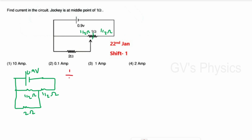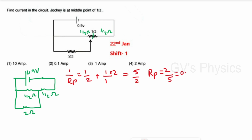For the parallel combination of 1/2 ohm and 2 ohm: 1/Rp = 1/2 + 1/(1/2) = 1/2 + 2 = 5/2, so Rp = 2/5 = 0.4 ohm. This 0.4 ohm is then in series with the remaining 1/2 ohm (0.5 ohm). Total resistance = 0.4 + 0.5 = 0.9 ohm.